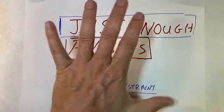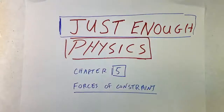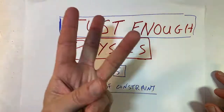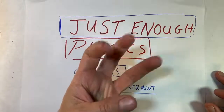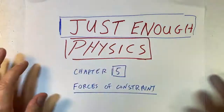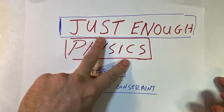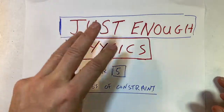Chapter five is about forces of constraint. There are three of those: the normal force, the frictional force, and tension. We're going to do an example using technically all three.